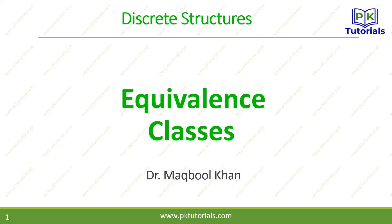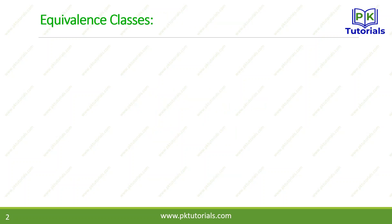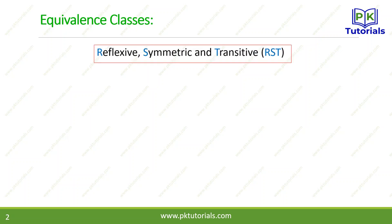Hello, welcome to PKT Tutorials. Today our topic is equivalence classes. So let's begin. Last class we studied about equivalence relations and three properties: Reflexive, Symmetric, and Transitive. If a relation has these three properties, it is called an equivalence relation.